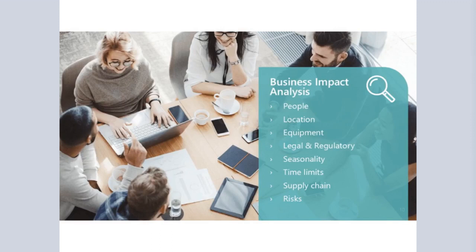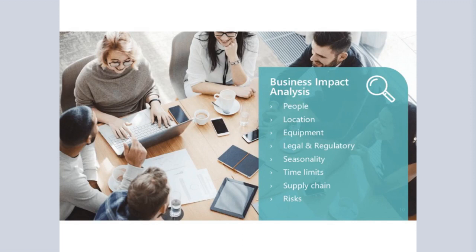Regarding time limits — I've taken the jargon out of this — there is specific terminology in the BIA process that asks: how long can you survive if you are impacted at a certain level? What data do you need to recover to? You might be able to limp along for a day or a week, but three months could kill the organisation. It's really important to assess those time limits. The supply chain piece is also very relevant: you need to consider where you sit in a supply chain, both internally and externally. People depend on you to provide an activity, product, or service, and you rely on others.